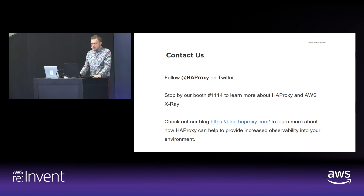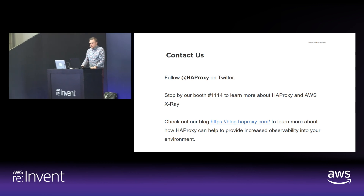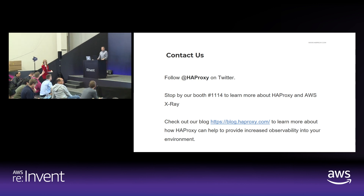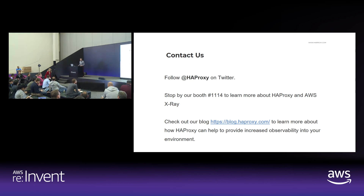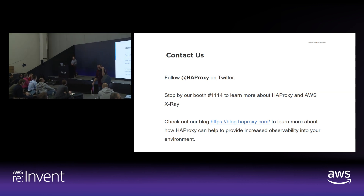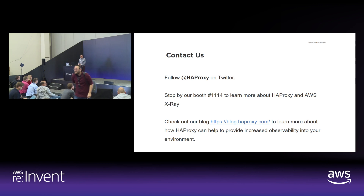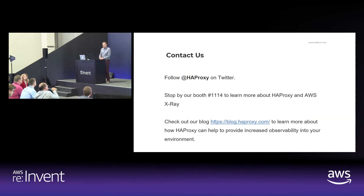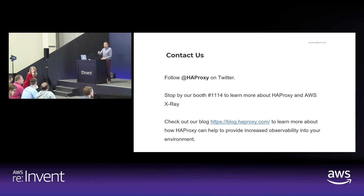We probably have a few minutes for questions. Question from audience: if we're using HAProxy here, do we have to bring that up in an instance? How are we bringing it up in Amazon? HAProxy would replace or be an additional layer to whatever load balancer you're currently using. For example, if you're using NLB, you can have NLB and then multiple HAProxy Enterprise instances behind that. Feel free to stop by our booth and we can discuss it further.